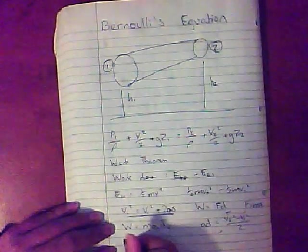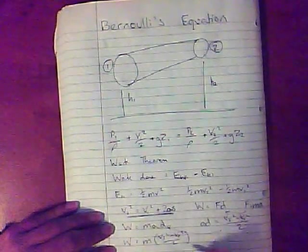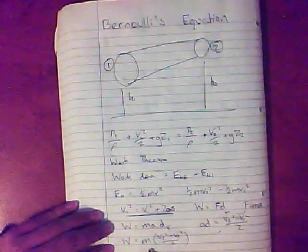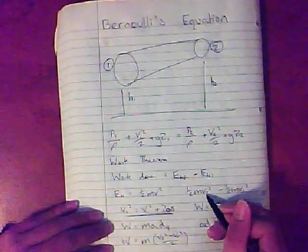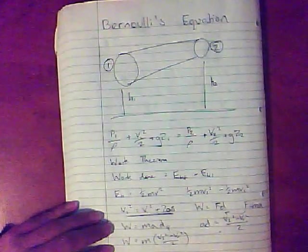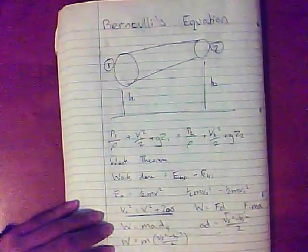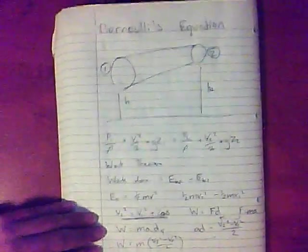Substitute that in, you get work done is equal to mass times all of that. And if you look carefully and break the brackets, what you end up getting is a half mv2 squared minus a half mv1 squared. So that's how you derive this work theorem, that the work done is equal to the difference of kinetic energy. So once you know that, we can start on Bernoulli's equation.